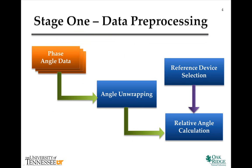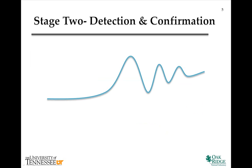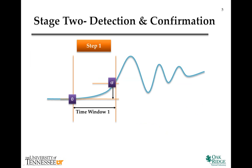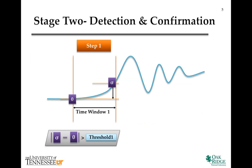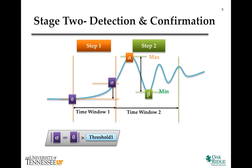There are two stages for the FNAT oscillation detection. The first stage is data preprocessing, where phase angle unwrapping and relative angle calculation will be performed. The second stage is oscillation detection and confirmation. First, the program calculates the absolute angle change within the first time window for each device. If it is over a certain threshold, detection is triggered.